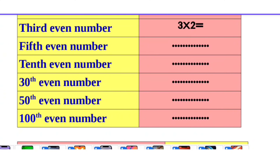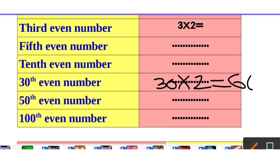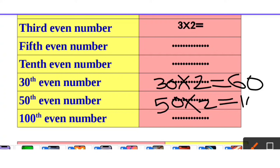The 13th even number: 30 into 2 equals 60. The 15th even number: 15 into 2 equals 30. The 100th even number: 100 into 2 equals 200.